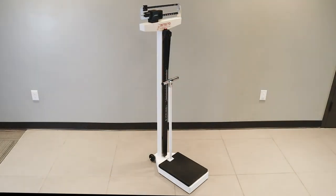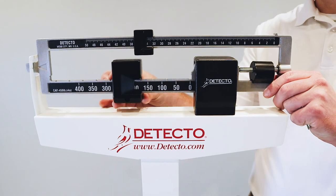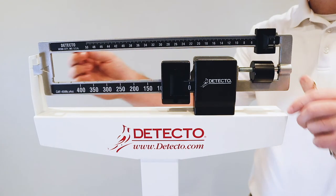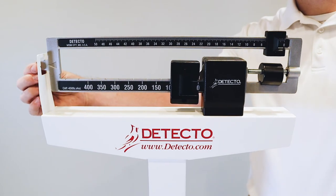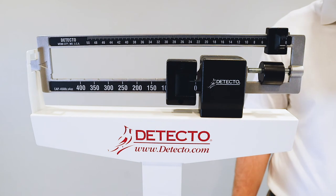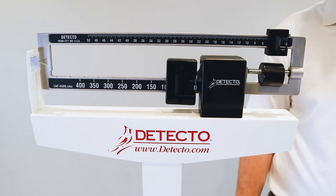Now that the scale is fully assembled, it must be balanced before operation. Ensure the scale is setting on a level surface and slide both the small and large poise to zero, the far left position on the way beam. Gently hold the beam pointer with your finger so it is centered within the trig loop area. Release the beam pointer and let it rise freely up or down.